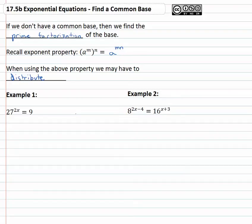So for example, we have 27 to the 2x equals 9. Those are not the same base, so what we'll do is look at 27 and find its prime factorization. Divided by 3 is 9, divided by 3 is 3, divided by 3 is 1. 27 is 3 to the third power, and then there's still a 2x on the outside of that, which is equal to 9.